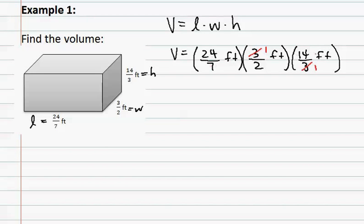You can also see that we have a seven and a fourteen. I know that seven goes into seven once and seven goes into fourteen twice. I can also see that there is a two on this bottom. Two goes into two once and it goes into this two once also.